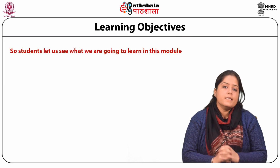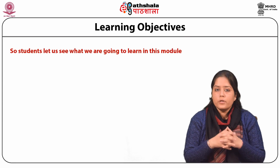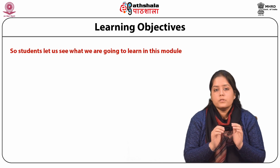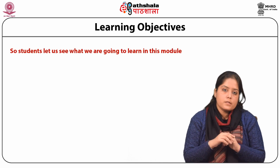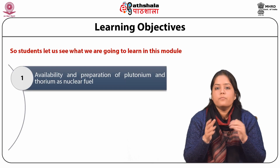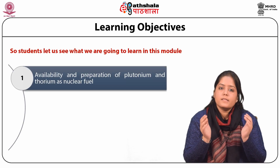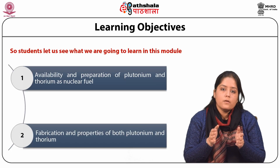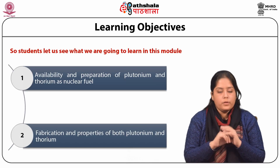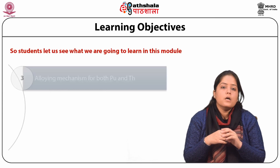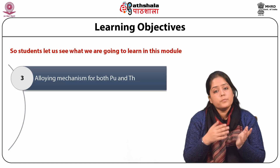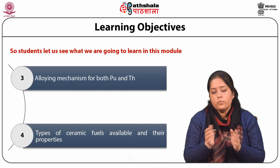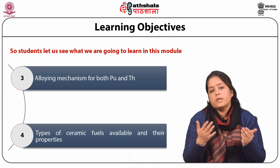Let us see what we are going to learn in this module. First, availability and preparation of plutonium and thorium as nuclear fuel. Second, fabrication and properties of both plutonium and thorium. Third, alloying mechanism for both plutonium and thorium. Lastly, different types of ceramic fuels available and their properties.